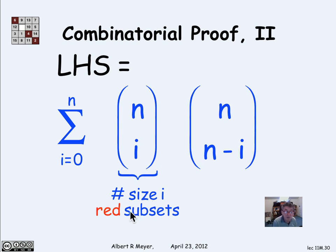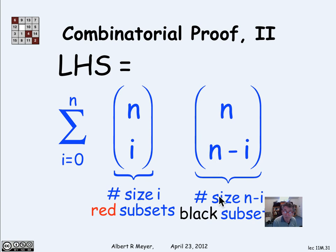That is, i of the red elements, a subset of size i of red elements. And then choose the remaining n minus i black elements. So that every subset of n out of 2n elements, where the 2n elements are n reds and n blacks, you can just classify it by how many reds does it have.